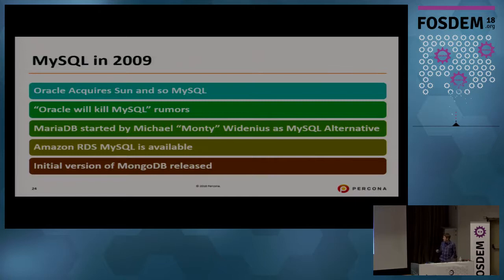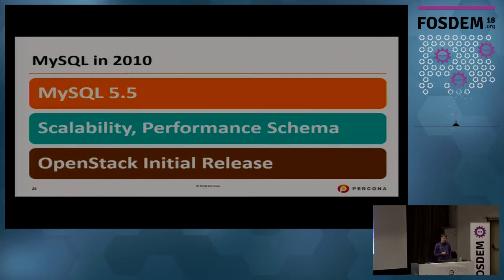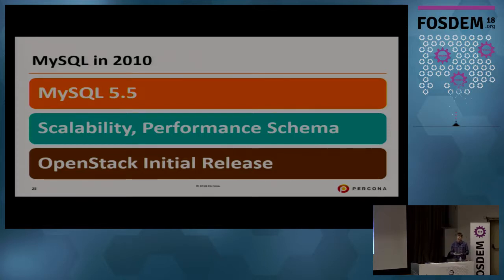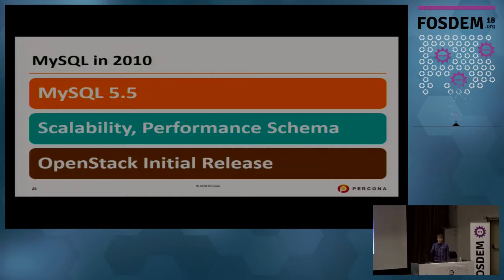Also in 2009, MongoDB — the leading NoSQL database — was first released. In 2010 we got MySQL 5.5, which had a lot of focus on scalability. In 5.5 we got the first big improvement in InnoDB performance: the teams were integrated, Falcon was ditched, and there was a lot of focus on making InnoDB work very well with MySQL. That's also where we first saw the Performance Schema as a way to better understand what's going on inside MySQL.